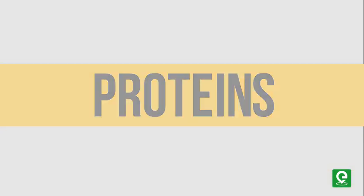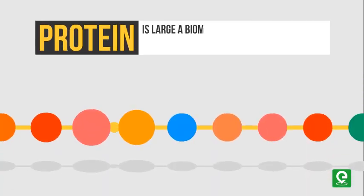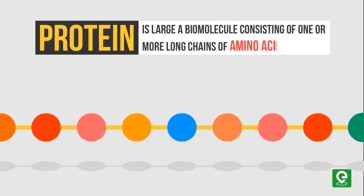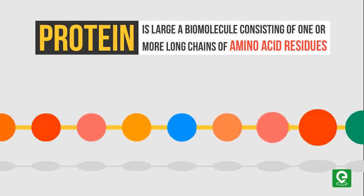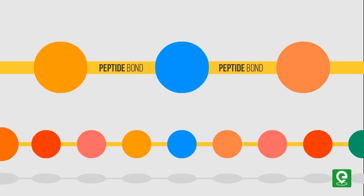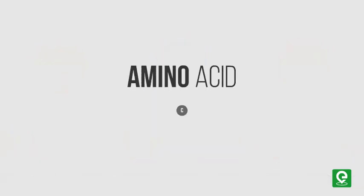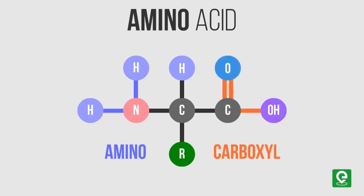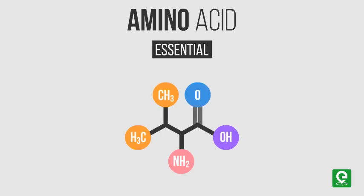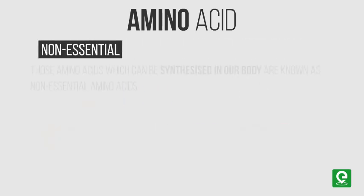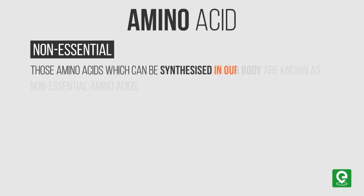Protein is a large biomolecule consisting of one or more long chains of amino acid residues. Amino acids are joined together by a peptide bond to form protein. Each amino acid contains an amino group (NH2) and a carboxyl group (COOH) as functional groups.